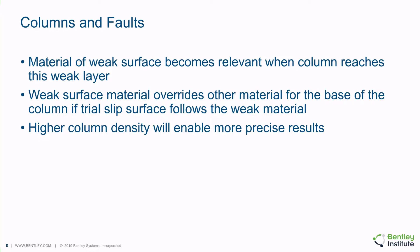It's worth talking briefly about the interaction between the individual columns used in the calculation and weak surfaces. The materials defined for a weak surface become relevant when a column base is on a particular weak layer. When this happens, the weak surface material overrides the surrounding material when the shear resistance at the base of the column is calculated. It's possible that a particular column will extend partially in a weak surface area and will cause somewhat of an averaging effect. A higher column density will enable more precise results in relation to minimizing this effect.